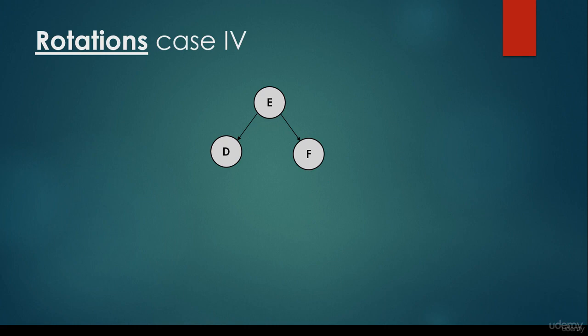Why is it good to make rotations? Because we make sure that the tree is going to be balanced. And why is that good? Because the logarithmic time complexity for most operations is going to be preserved — and this is exactly what we are looking for. A balanced tree, whether it is an AVL tree or a red-black tree, is quite predictable. We know for certain that operations are going to be O(log n) time complexity in the worst case and best case. That's all about the 4 cases — thanks for watching.